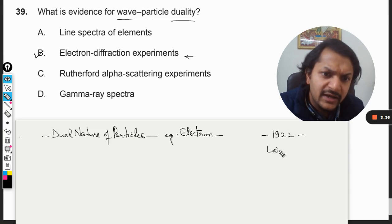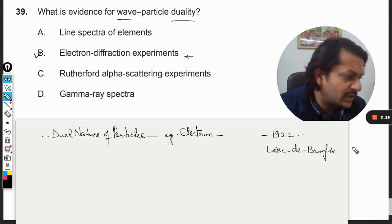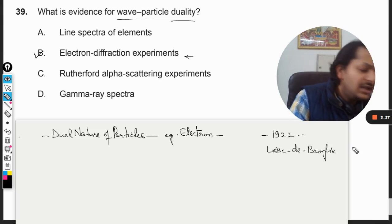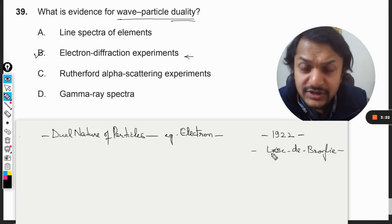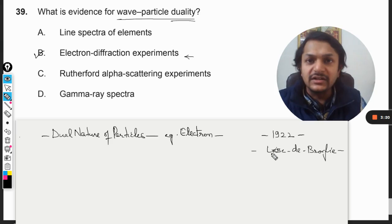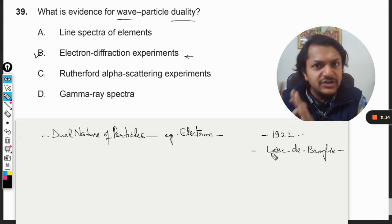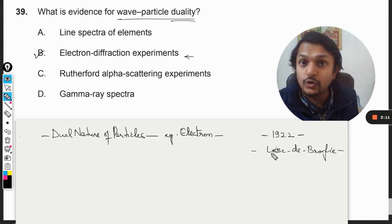The theory was given by a French scientist, Louis de Broglie. And this person gave a very bold hypothesis that even particles have dual nature - they also exist as a wave. So they exist as a particle, there's no doubt, but they do exist as a wave also, having wave properties associated with them.